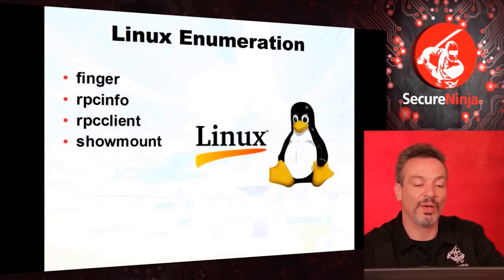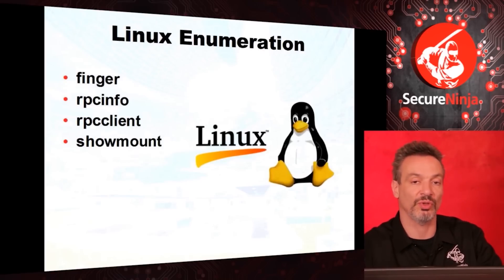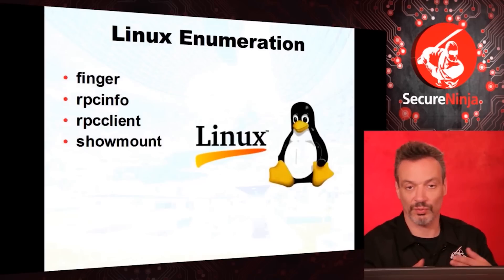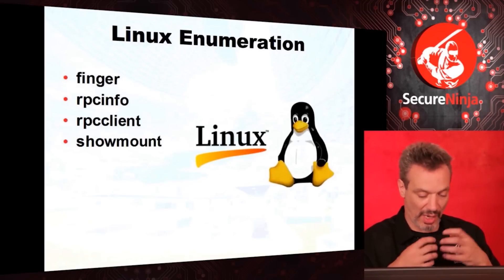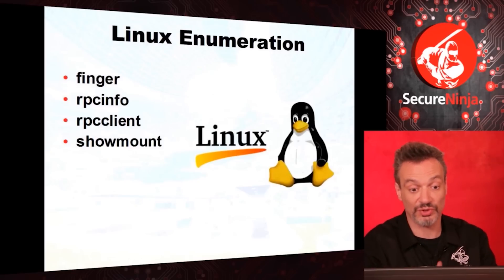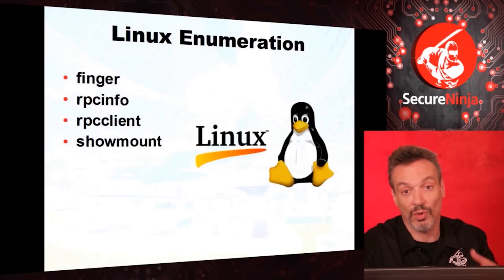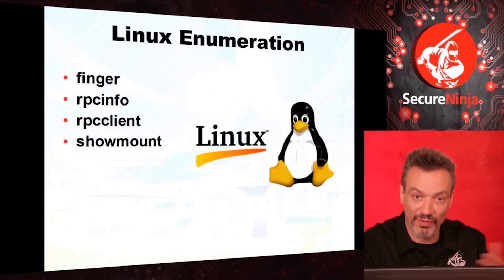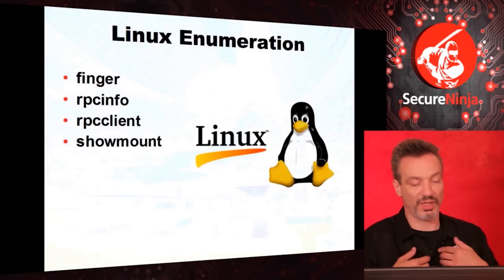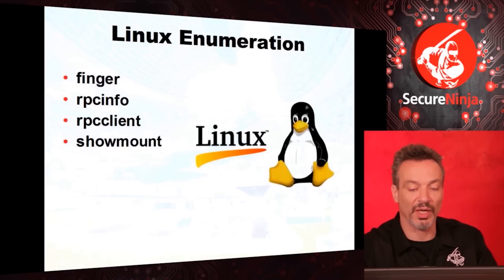Linux enumeration — just a couple of commands you'll want to remember for your test. I mentioned 'finger' — I could look up information on a particular user. RPCs are remote procedure calls — this is how the client-server world works. On one system I ask you: could you run this service? That's a remote procedure call. I want to know what RPCs you have there — are you an NFS server? RPC client the other way: what is that client connected to? And 'showmount' — what drives are currently mounted.